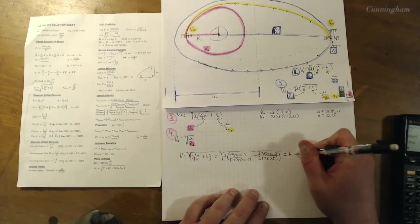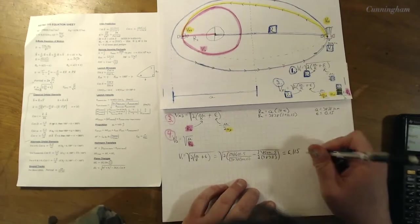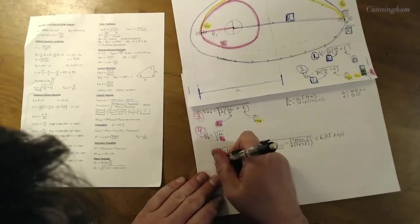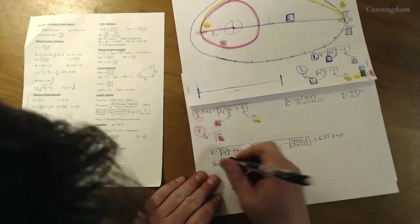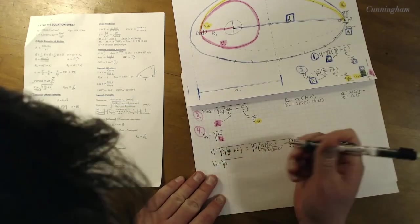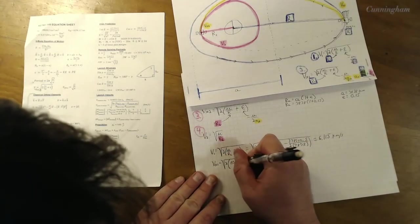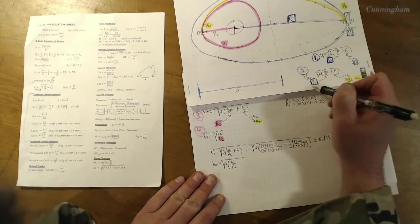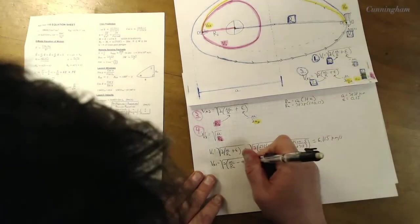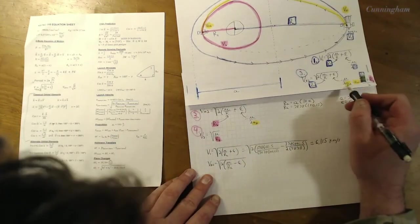Kind of nice and even. So the eccentricity of that orbit is 0.15. And so we'll have no trouble finding our radius at apogee of the mission orbit. All right, whatever that ends up being.